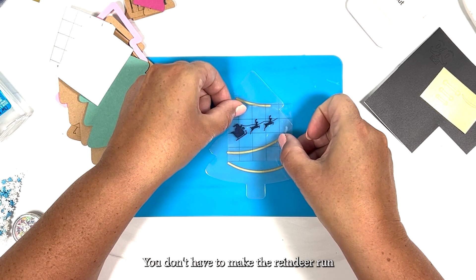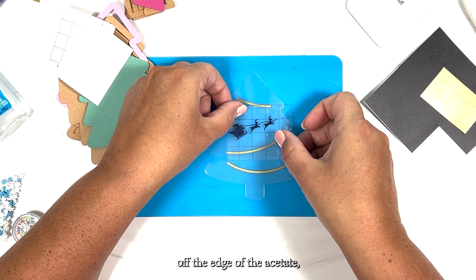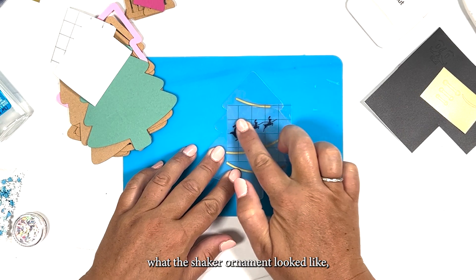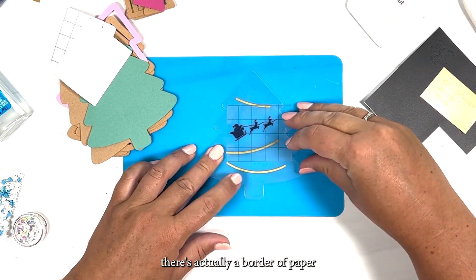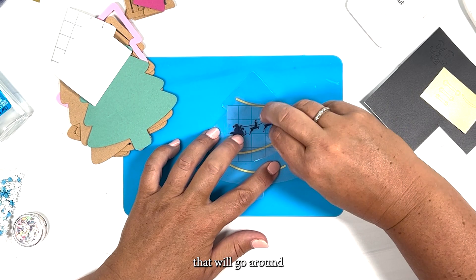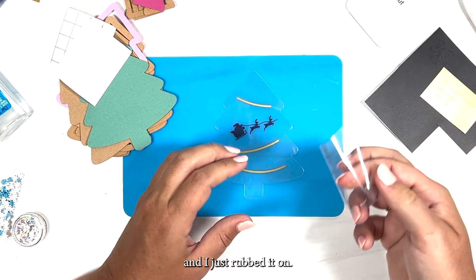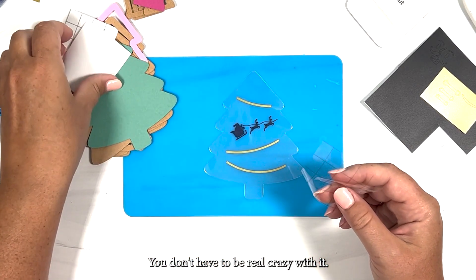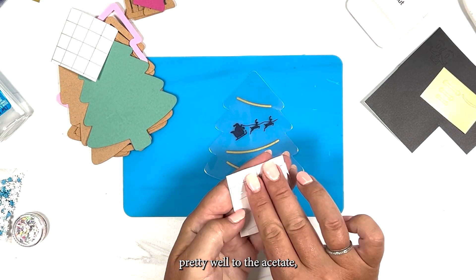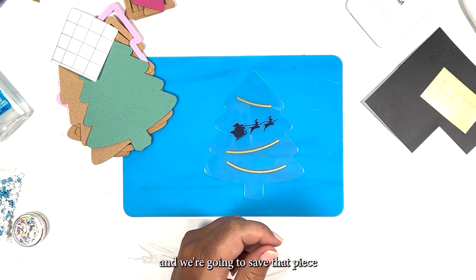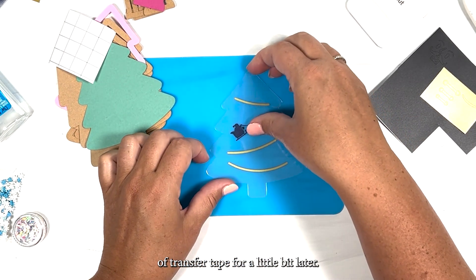You don't have to make the reindeer run off the edge of the acetate because if you remember what the shaker ornament looked like, there's actually a border of paper that will go around the edge of the acetate. So it kind of goes right in the middle and I just rubbed it on. You don't have to be real crazy with it. The vinyl sticks pretty well to the acetate and we're going to save that piece of transfer tape for a little bit later.